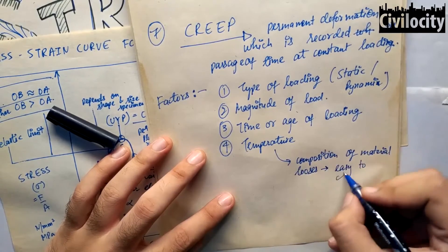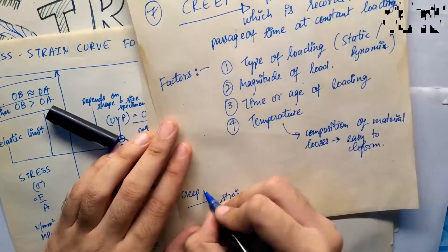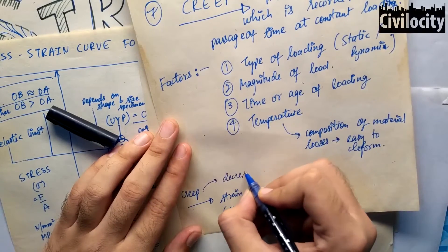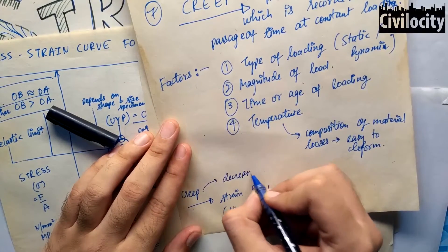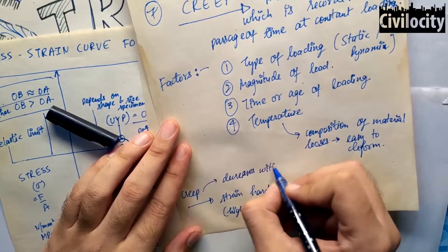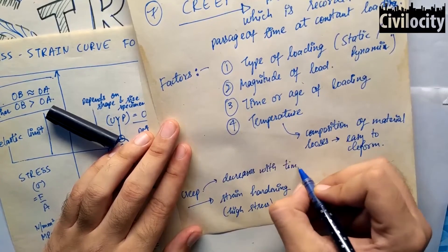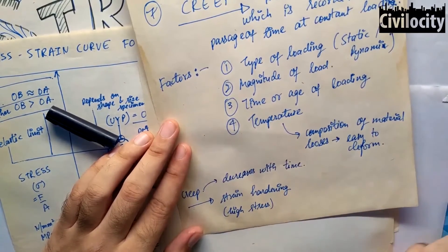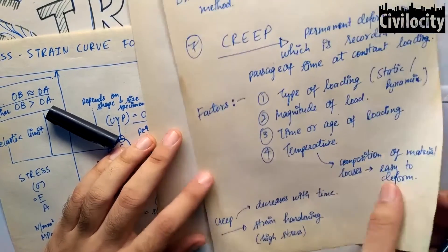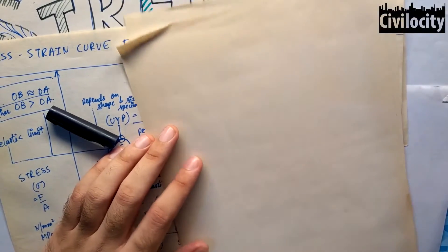The strain hardening zone is the zone where the material deforms more and more as more stress is applied. This is why we do not want to design our structure or building to be in this zone. So creep decreases over time.